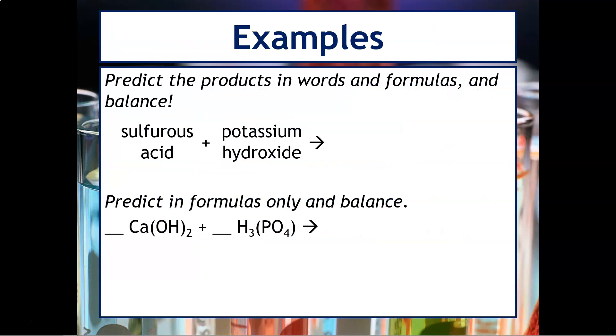Here's an example. Predict the products in words and formulas and balance the equations. So for example, we've got sulfurous acid plus potassium hydroxide. Whenever we had an acid, we would have to change it to the original ionic name. So this would be hydrogen sulfite. Then in a double replacement reaction, we would see that hydrogen would combine with the hydroxide so that you form water and potassium sulfate. So they just switch partners.